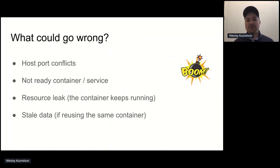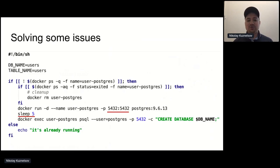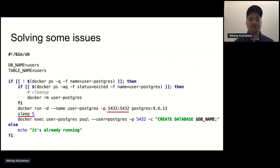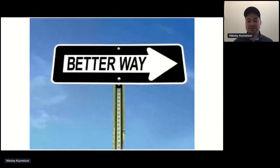We need to care about stopping the container after the test, otherwise our resources might leak. If we reuse the same container, we can get stale data in the database. If we try to address some of these issues, our shell script becomes really bloated. And still we're not able to solve all the issues — we still have a fixed port, and if we sleep for five seconds before we start the test, maybe it's not enough. In other cases, we over-commit. There should definitely be a better way to do that.